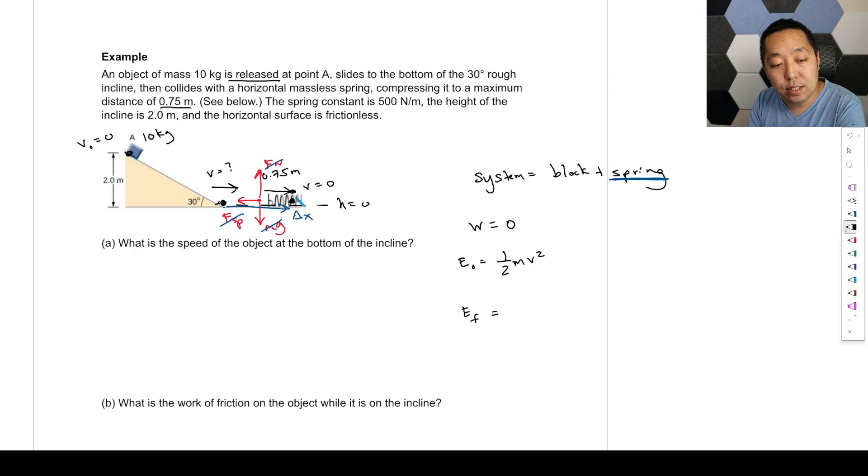Final energy. Well, kinetic energy is zero because at the maximum compression, the velocity is zero, but it does have some spring potential energy here. Okay, and then finally we do work is the change in energy. That's going to be zero is equal to one-half mv squared minus one-half kx squared. Oops, sorry, the other way around. Final minus initial, one-half kx squared minus one-half mv squared.